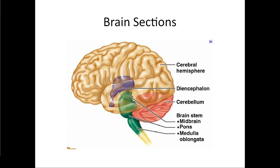These do all of our higher thinking. We have the diencephalon, which has our limbic system and a lot of other central stuff. We have the cerebellum, which is important for coordination and posture. And then we have the brainstem with the midbrain, the pons, and the medulla oblongata.